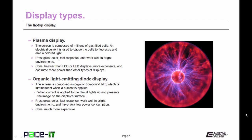So let's talk about the plasma display. The screen is composed of millions of gas-filled cells. An electrical current is passed through those cells. It's used to cause the cells to fluoresce and emit a colored light. The benefits of a plasma display is that they have great color. They have a very fast response as well and they work well in bright environments. On the downside, they're heavier than LCD or LED displays. They're also more expensive and consume more power, thus reducing the amount of time that a laptop can operate off of its battery.